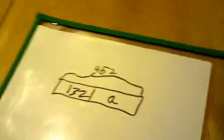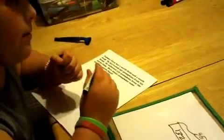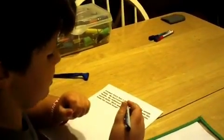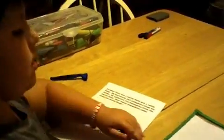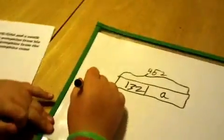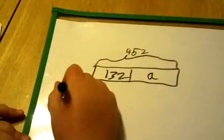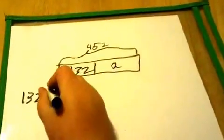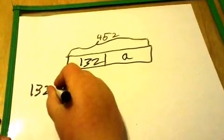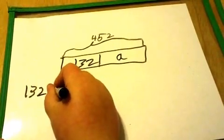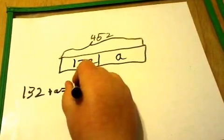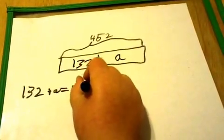And now, let's work up an equation. Okay. So, from my point of view, to make it a little bit harder, I would put 132 plus A equals 452.